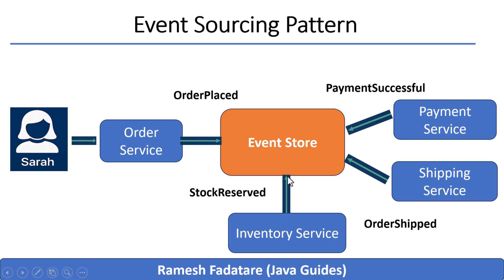Next, the inventory service picks up that 'order placed' event. It checks if the phone is in stock. If everything looks good, it emits another event: 'stock reserved.' Now the payment service listens for that. When it sees 'stock reserved,' it charges Sarah's card and emits 'payment successful.' Finally, the shipping service sees that payment was successful, prepares the package, and emits 'order shipped.'